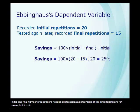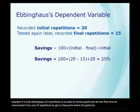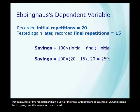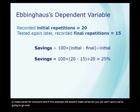For example, if it took Ebbinghaus 20 repetitions to recite a particular list the first time he memorized it, but only 15 repetitions to reach that point 24 hours later, that's a savings of five repetitions — which is 25% of the initial 20 repetitions, so savings of 25%. If this example still doesn't make sense yet, don't worry — we're going to go over similar examples in class.